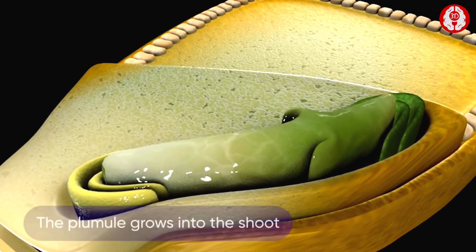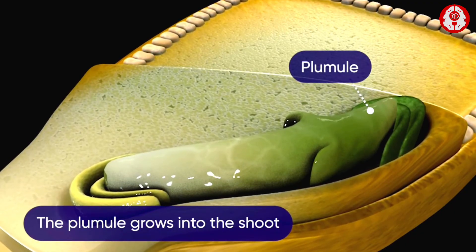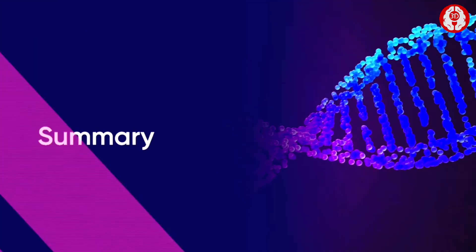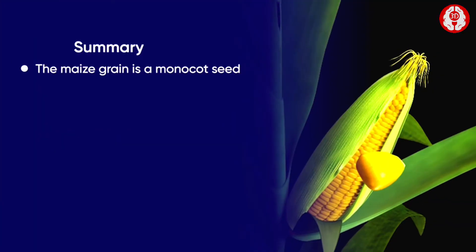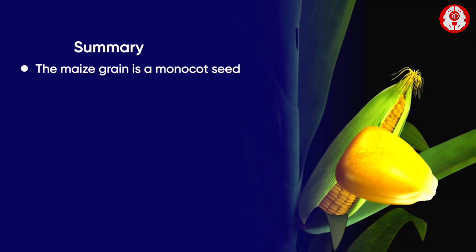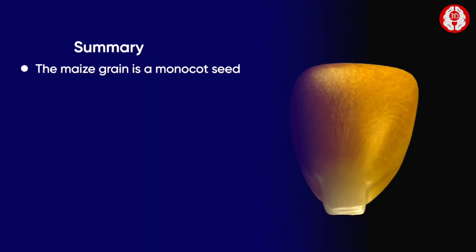The radicle grows into the root while the plumule grows into the shoot. To summarize, a cross-section of a maize seed shows the maize grain is a monocot seed.